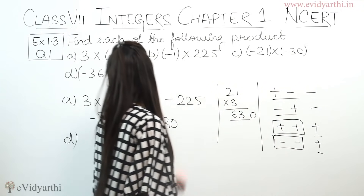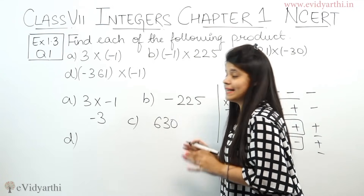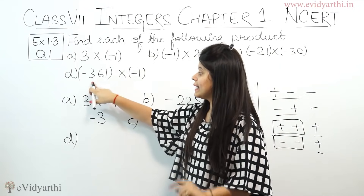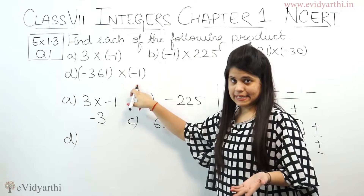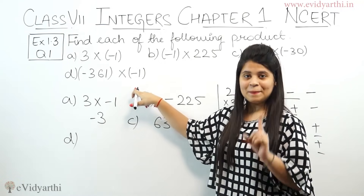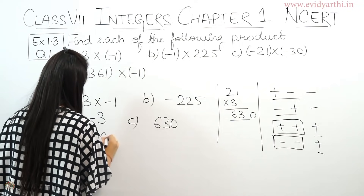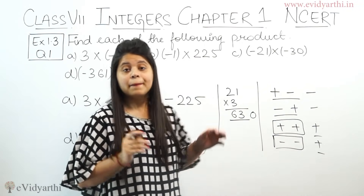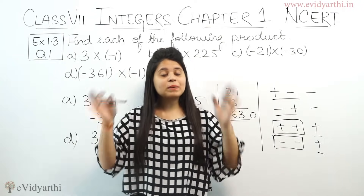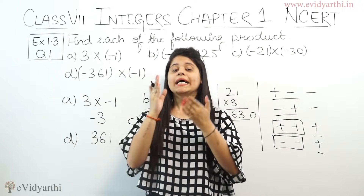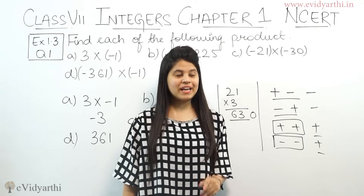Part D is minus 361 × minus 1. The number is 361 × 1 = 361. Minus × minus = plus, so the answer is positive 361. Basically the concept of this portion is to make clear in your mind which sign is used at the time of multiplication.